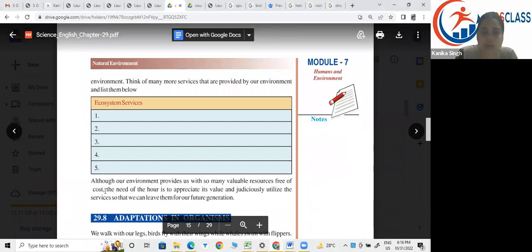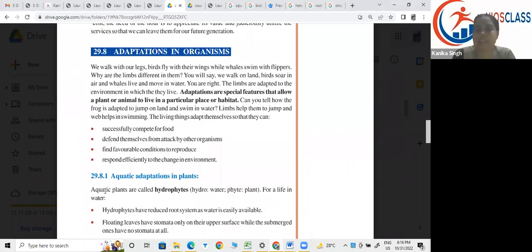Now, the next topic is adaptation in organisms. What is adaptation? First of all, a feature of plant and animal to adapt at a particular habitat. Do you think the lizard present in desert is similar to the lizard present in a forest, their adaptation? Yes or no? Only Jyotika is learning. What about others? No, Bhabish is saying no, Jyotika is saying no.